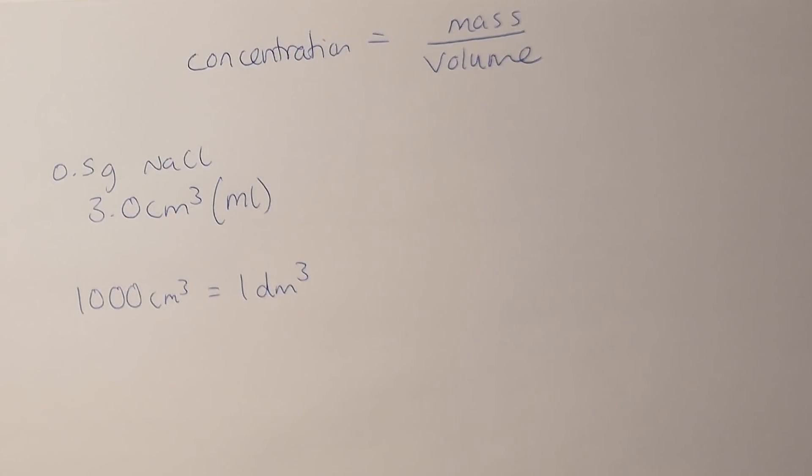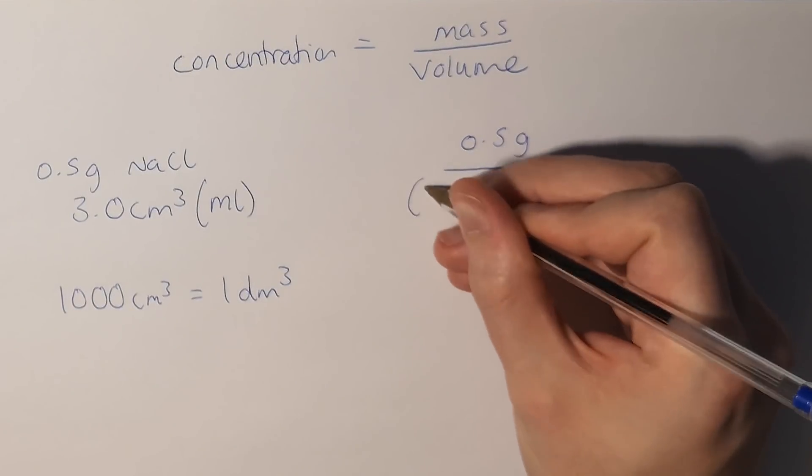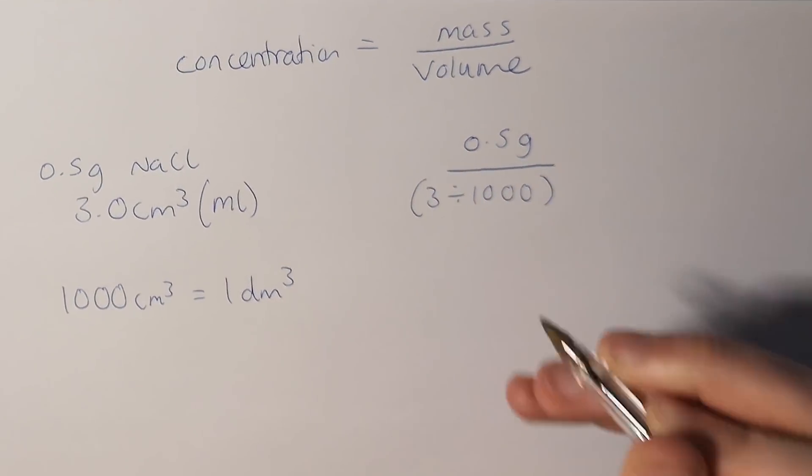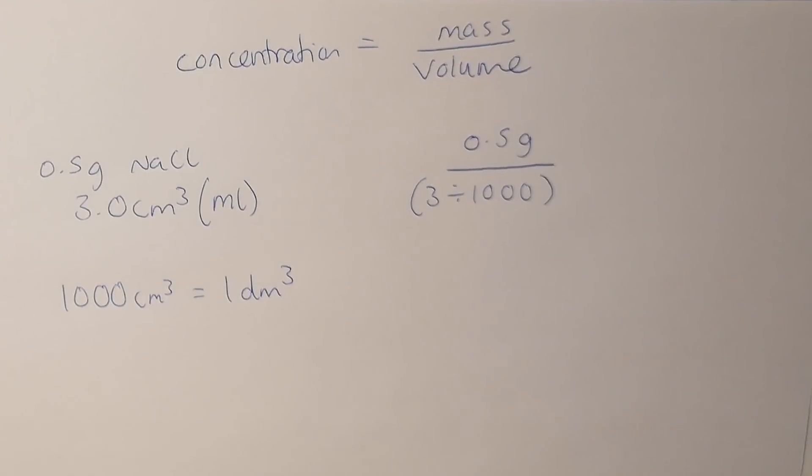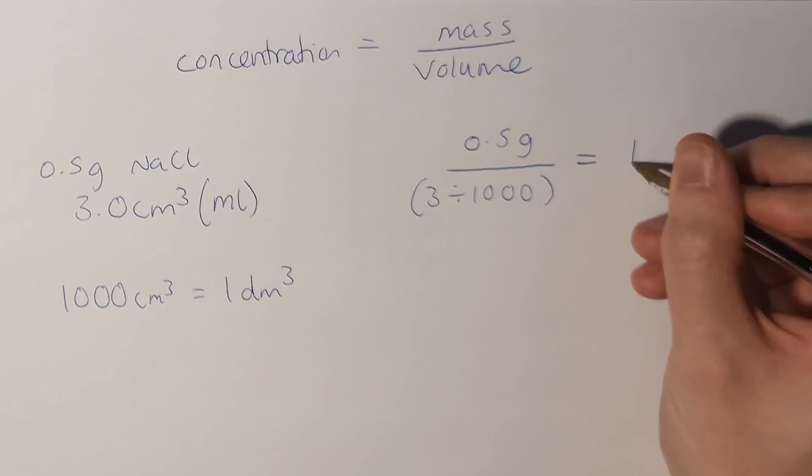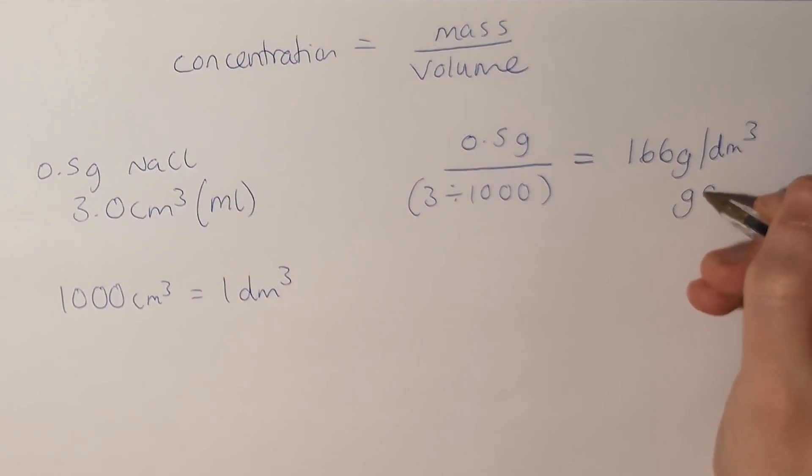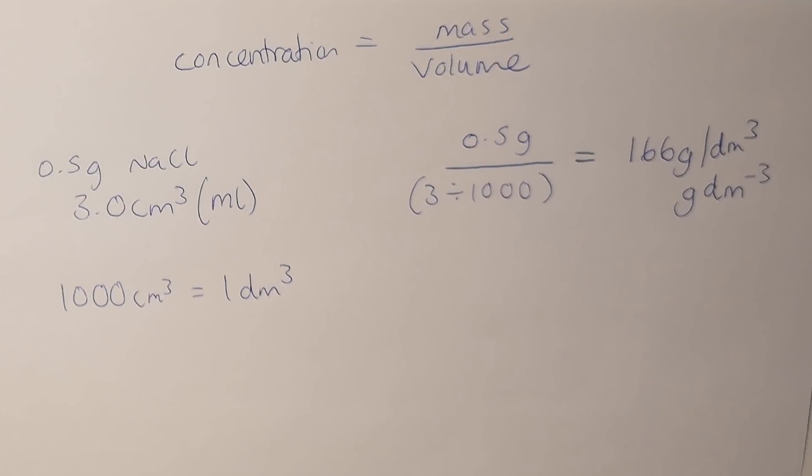So for sodium chloride, my mass is 0.5 grams, I'm dividing it by 3 divided by a thousand to get that into decimeters cubed. You can do that before this calculation or in the calculation; just make sure when you type it into your calculator you use brackets. That's going to give me a value of 166 grams per decimeter cubed. Our units are grams per decimeter cubed. You may see them written as g/dm⁻³, which means exactly the same thing.